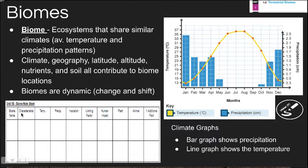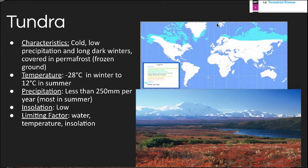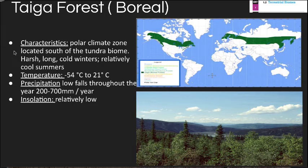Going forward, record notes in a chart with room for all nine biomes. The first biome is tundra, shown in light blue at the top of the map. Arctic tundra has cold, long dark winters and frozen ground called permafrost — permanently frozen ground. The summer season is very short, less than 250 millimeters of precipitation per year, with low insolation. Limiting factors are water, temperature, and insolation, making it very inhospitable to most plants and animals.